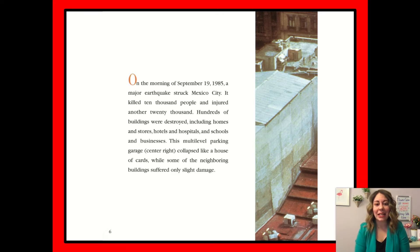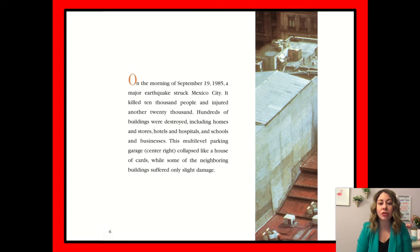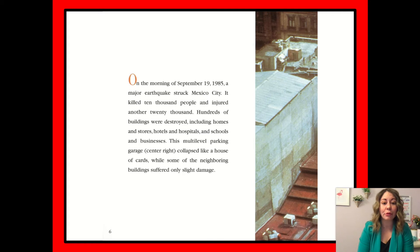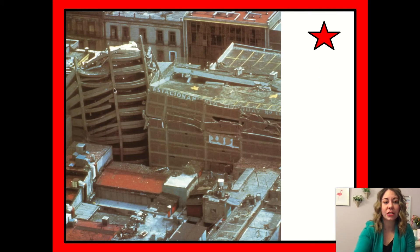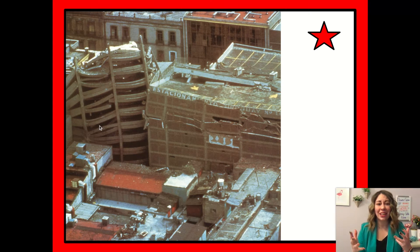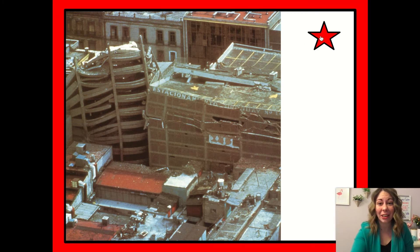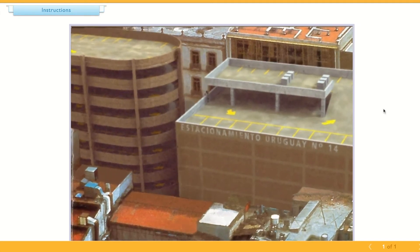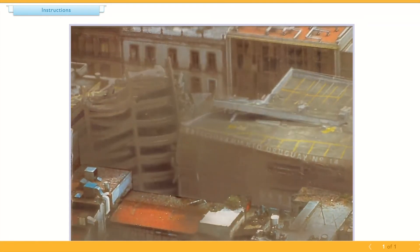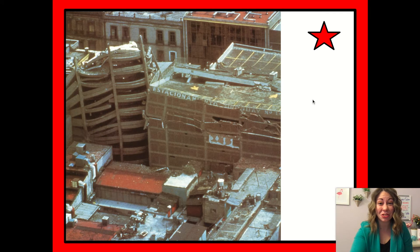On the morning of September 19th, 1985, a major earthquake struck Mexico City. It killed 10,000 people and injured another 20,000. Hundreds of buildings were destroyed, including homes and stores, hotels and hospitals, and schools and businesses. This multi-level parking garage in the center collapsed like a house of cards, while some of the neighboring buildings suffered only slight damage. Let's look at this parking garage — it crumbled like a house of cards. Think back to our little simulation of an earthquake, and imagine these buildings shaking.